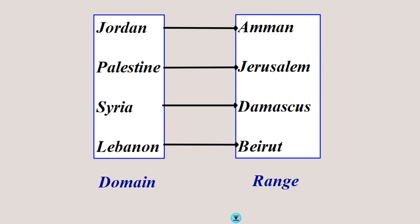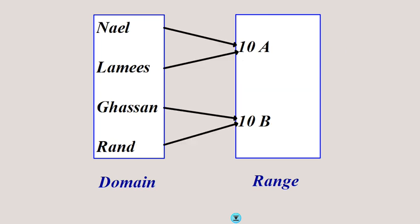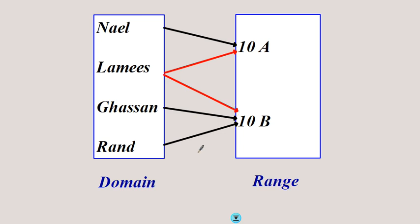The same applies to the states — Jordan has one image only; a state cannot have two capitals. Palestine maps to Jerusalem only. So this is a function because each element in this set maps to one element only in the second set. However, if you look at an absurd situation where Lemmese is assigned to two different classes, this element has two images in the set — and this is why it is not a function. It is merely a relation.